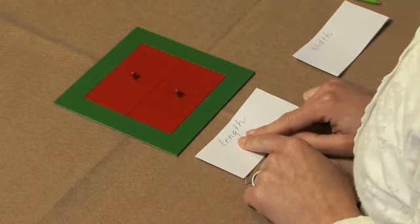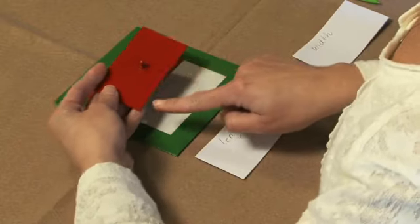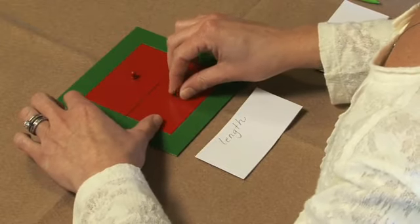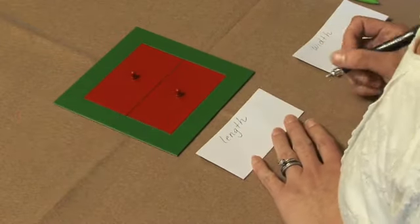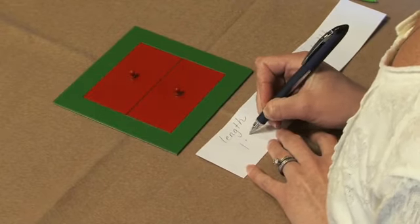We'll first look at length. The length of the inside of the inset is the same as the length on the inset. So our proportion, our ratio for proportion, is one to one.